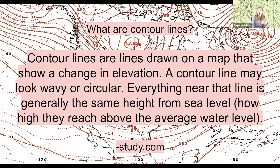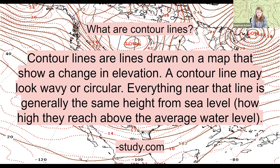If you go to the beach and stand right next to the ocean, that's called sea level — you're right where the level of the sea is. If you were to go 100 feet above that, you would be 100 feet above sea level, so you'd have some elevation. Contour lines show elevation and they usually look wavy or circular. You can see in the background of this slide there are lines crossing the image — some in circles in the top right corner and some more wavy ones in the other corners. Those are all contour lines.